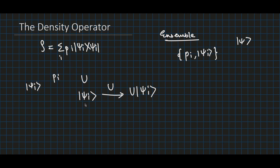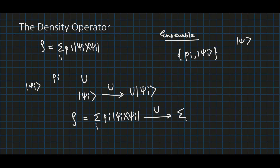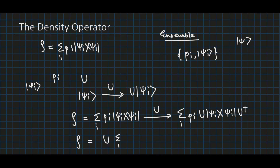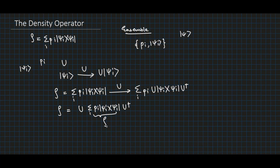Similarly, the evolution of the density operator is described as ρ = Σ_i P_i |ψ_i⟩⟨ψ_i|. Undergoing evolution gives us Σ_i P_i U|ψ_i⟩⟨ψ_i|U†. Since U is linear, we can take U outside, so ρ' = U (Σ_i P_i |ψ_i⟩⟨ψ_i|) U† = UρU†. So the evolution of ρ to ρ' is equal to UρU†.